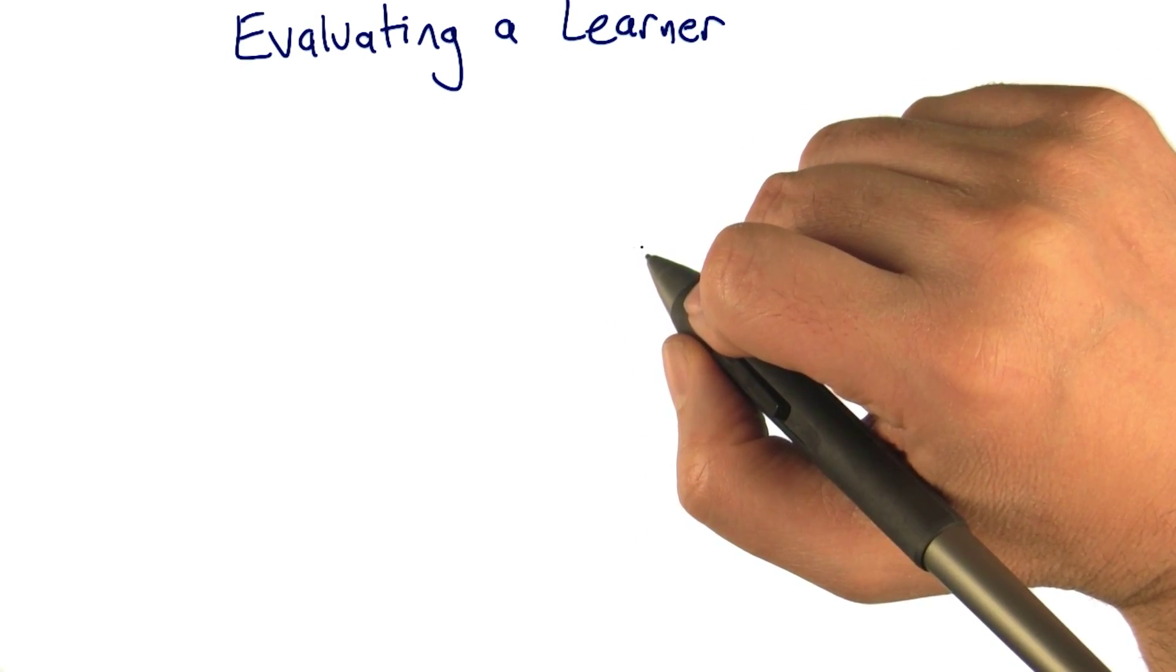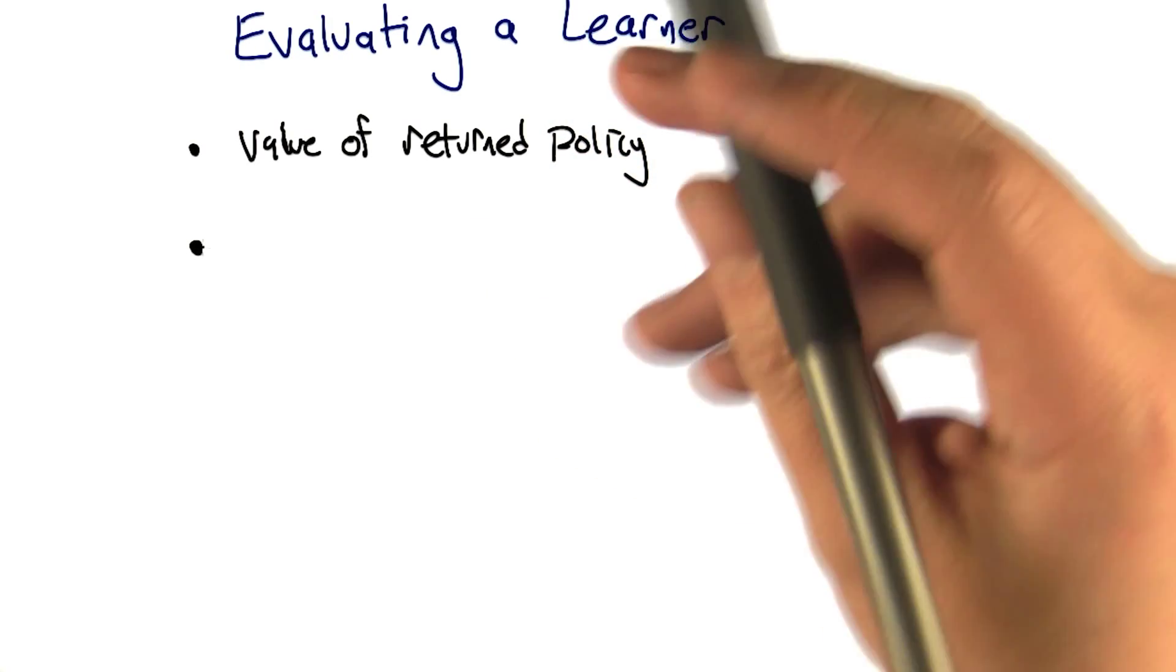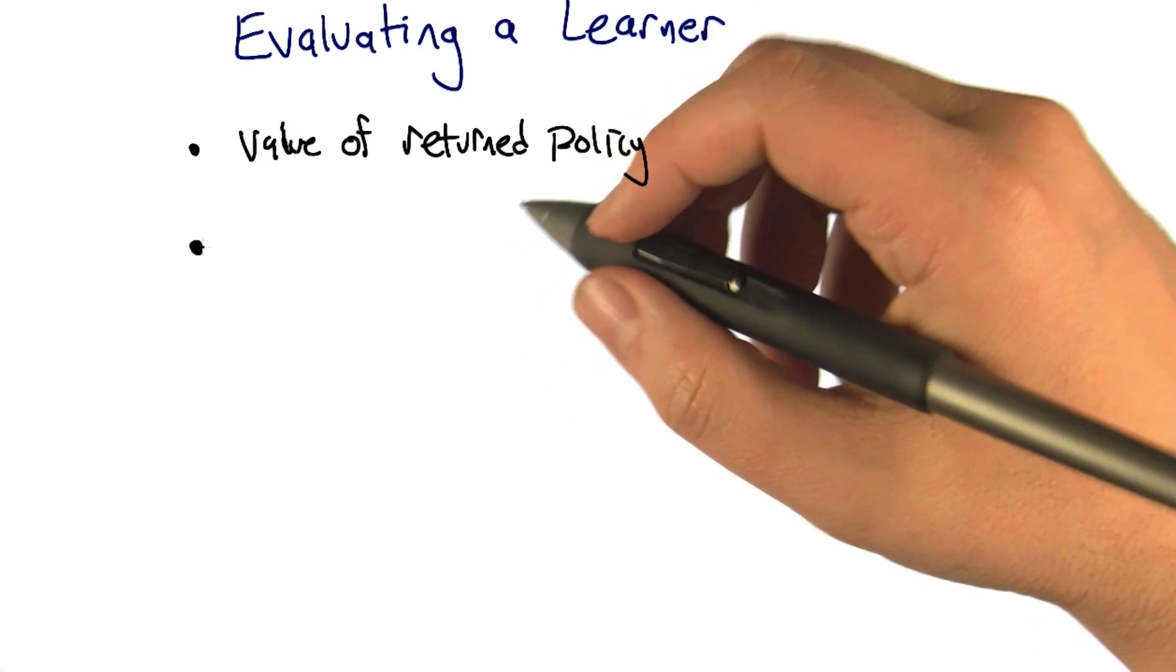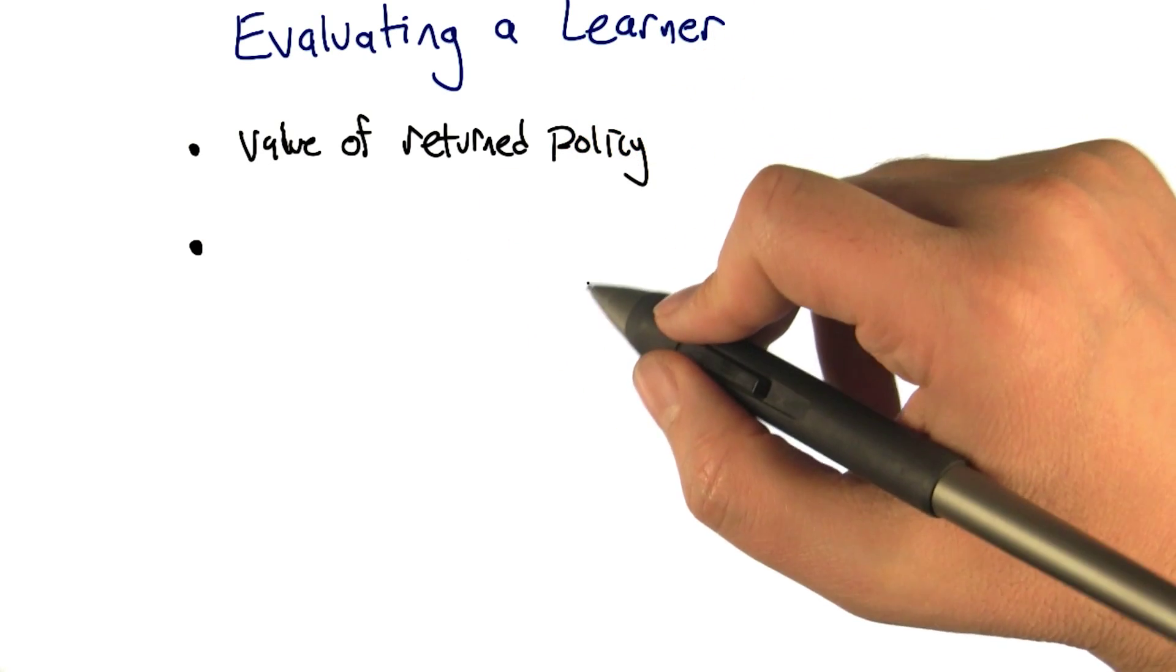Sure. It's as good as its policy. So that seems like a good idea, that a good learner is one that returns a good policy. Sure. What if we have two learners that return the same policy, say the optimal policy?